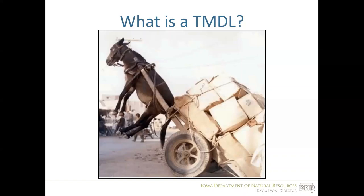Just as with the mule cart system, our aquatic system can handle a certain amount of load and still function as expected. However, there comes a point when the pollutant load reaches a tipping point, resulting in the aquatic system not functioning as expected — there is too much pollution on the system, resulting in diminished function. All is not lost: the pollutant load to the aquatic system can be reduced, allowing it to function as expected.